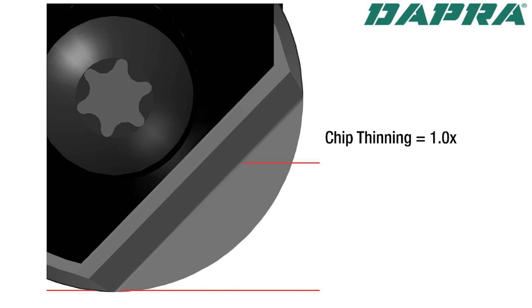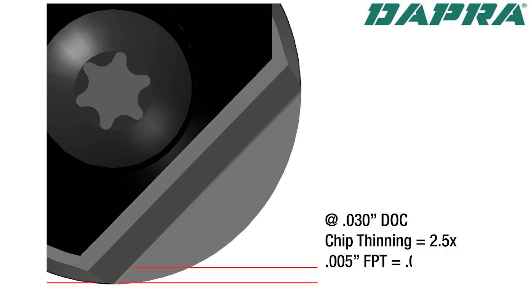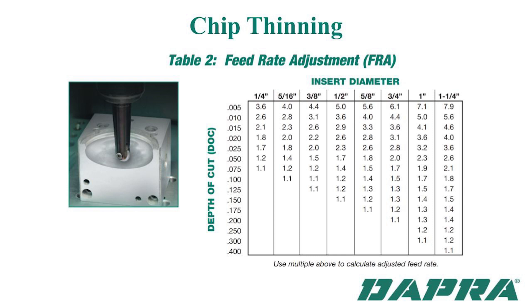Let's see a few chip thinning examples. Running a three-quarter ball nose at a quarter-inch depth of cut, a feed per tooth of 5 thousandths yields an actual chip thickness of almost 5 thousandths — feed rate and chip thickness are virtually identical. Lighten the depth of cut to 100 thousandths and that same 5-thousandth feed per tooth yields only a 3.5-thousandths chip. Reduce further to 30 thousandths depth of cut and it produces only about a 2-thousandths chip. At a light finishing depth of cut of 10 thousandths, the 5-thousandth feed rate per tooth yields only about a 1-thousandth actual chip thickness. We need to compensate for this or we'll be underfeeding the tool, reducing tool life and costing cycle time.